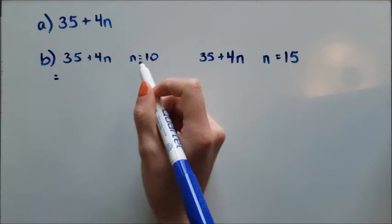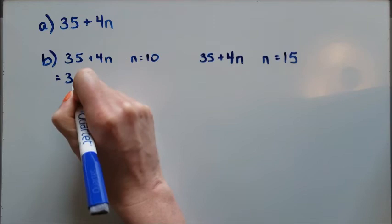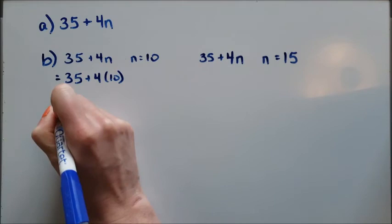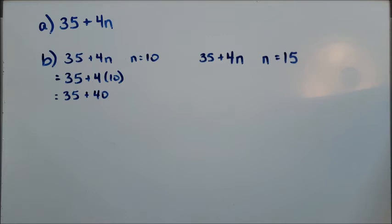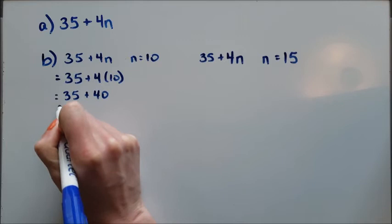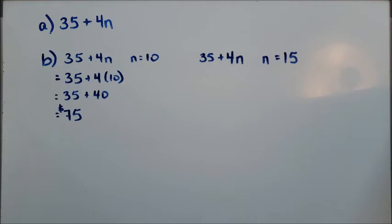I'll start on this one. Remember when I'm subbing this in, I need to replace exactly where the n is. 35 stays the same, plus 4 times 10, 35 plus 40, and that will give me $75. If 10 people show up, my party will cost $75.